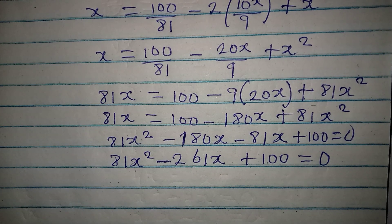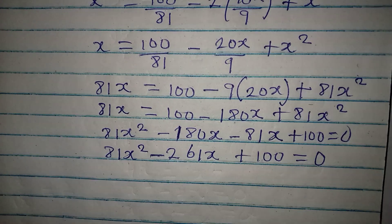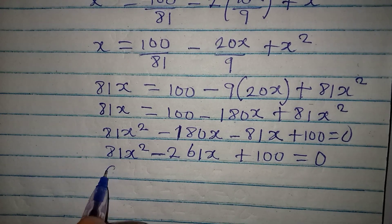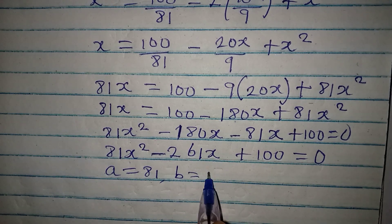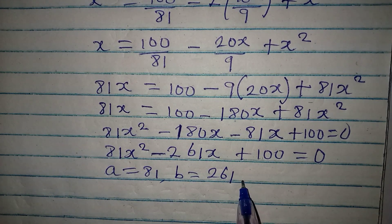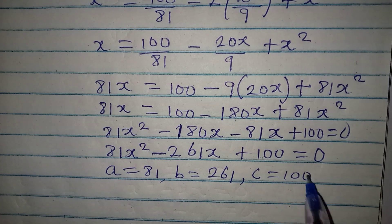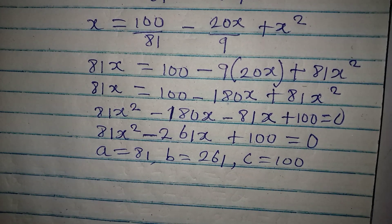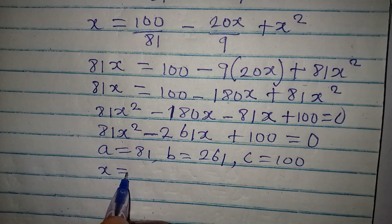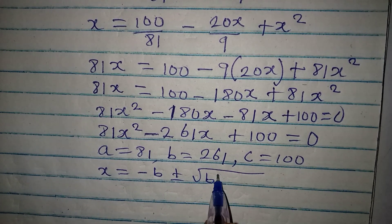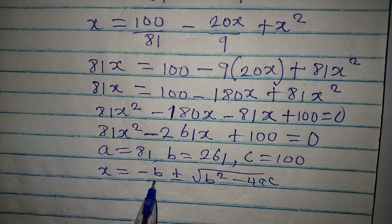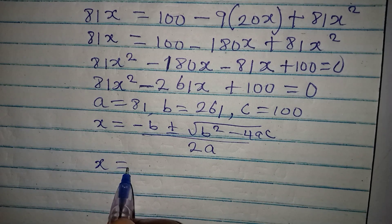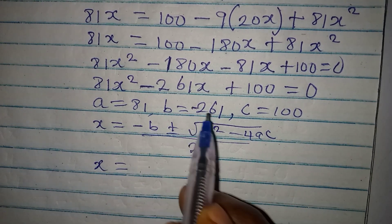Now let's solve this quadratic equation using the formula method. Our a is 81, b is negative 261, and c is 100. Rather than looking for factors, we use the formula: x equals negative b plus or minus square root of b squared minus 4ac, all over 2a.